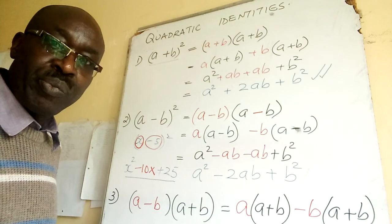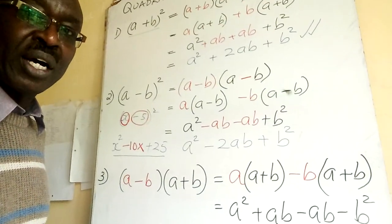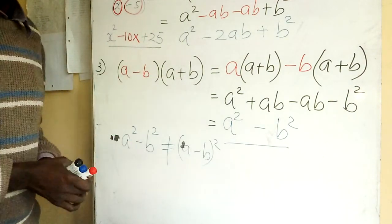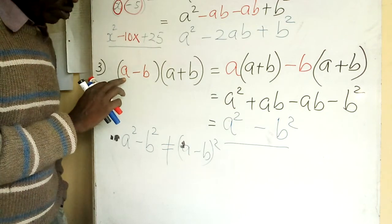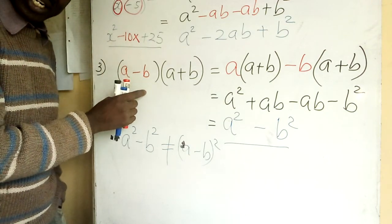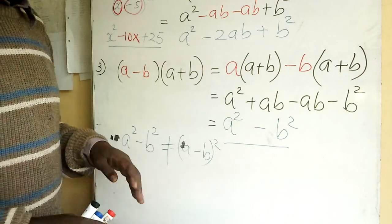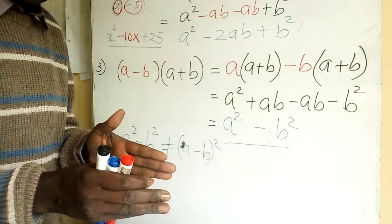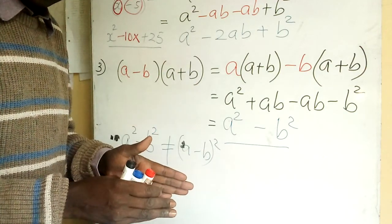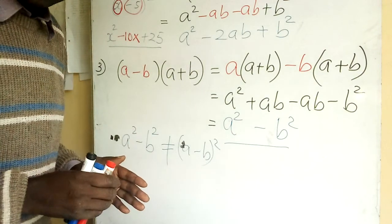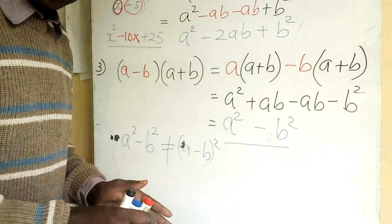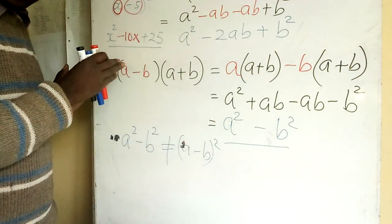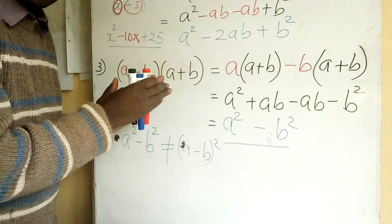Now the key one, maybe we focus a bit here. The key one here, number three: suppose I give you (a-b) one bracket and the other one (a+b). The top two examples you had a similar bracket repeated: (a+b)(a+b), second example (a-b) times (a-b).